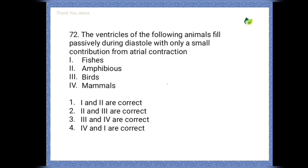The ventricles of the following animals fill passively during diastole with only a small contribution from atrial contraction. From the given options, 3 and 4 are correct — that means birds and mammals are correct.